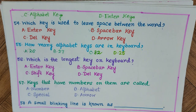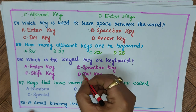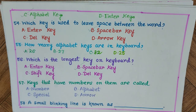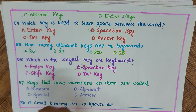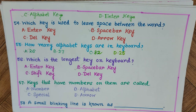Question 56: Which is the longest key on a keyboard? A) enter key, B) spacebar key, C) shift key, D) del key. The answer is B) spacebar key. Question 57: Keys that have numbers on them are called — A) number, B) alphabet, C) special, D) arrow. The answer is A) number.